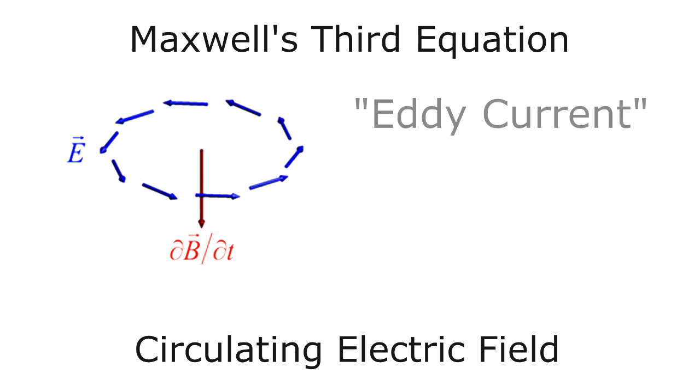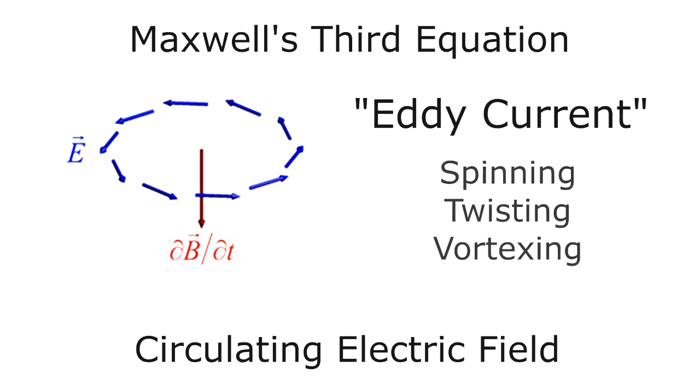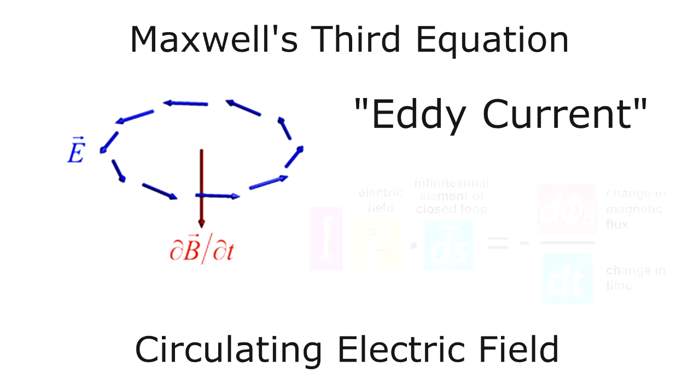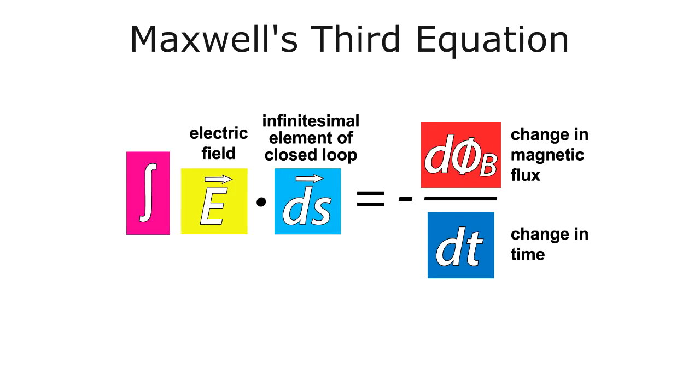This is also called an eddy current, which means spinning, twisting, vortexing, and the direction of this circulating EMF opposes the change per Lenz's law - remember the negative sign in Faraday's law. So this third equation of Maxwell's is really Faraday's law of induction and it includes Lenz's law.